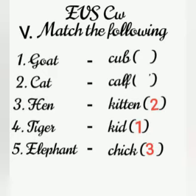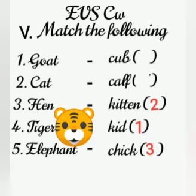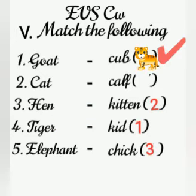Now, fourth one — tell me, children, what is the young one of a tiger? Yes, the young one of a tiger is cub. Put number four.